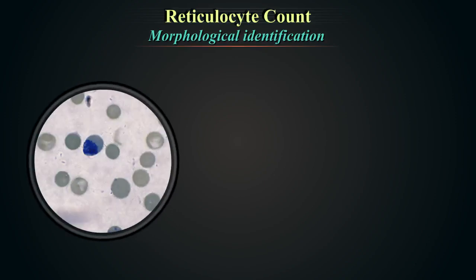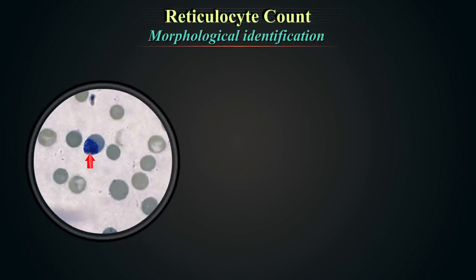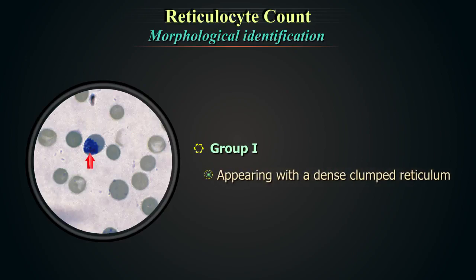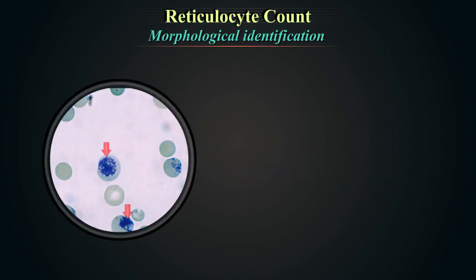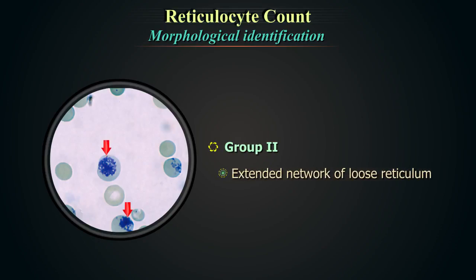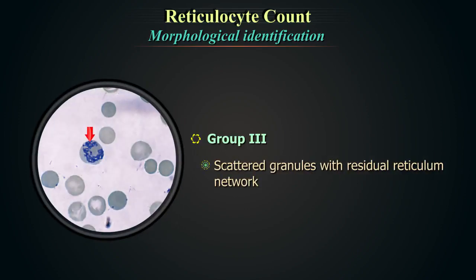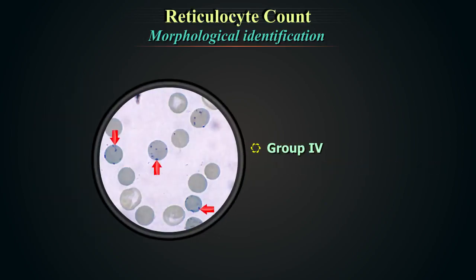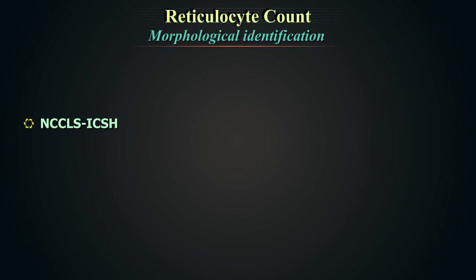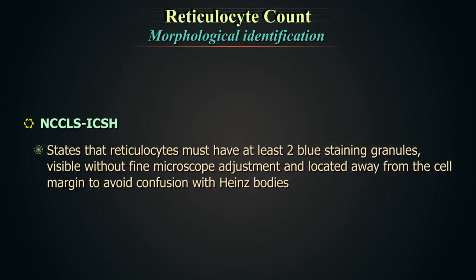Now let us look at some microphotographs to identify reticulocytes and stages of maturation. Group 1 reticulocyte appears with a dense clumped reticulum. Group 2 reticulocyte shows an extended network of loose reticulum. Group 3 shows scattered granules with residual reticulum network. Group 4 shows scattered granules with no residual reticulum. The NCCLS-ICSH definition requires at least two blue-staining granules, visible without fine microscope adjustment and located away from the cell margin to avoid confusion with Heinz bodies.